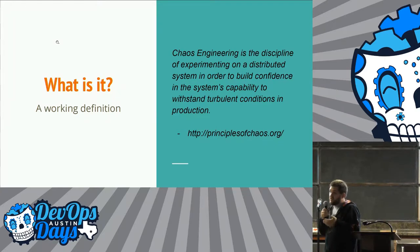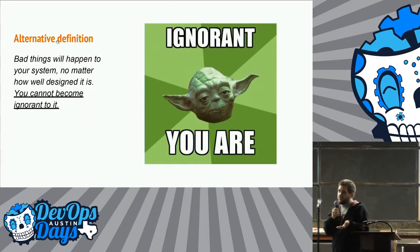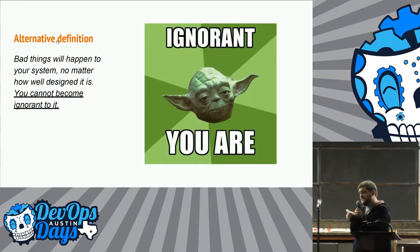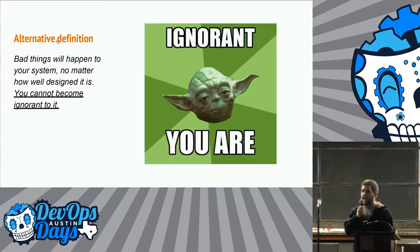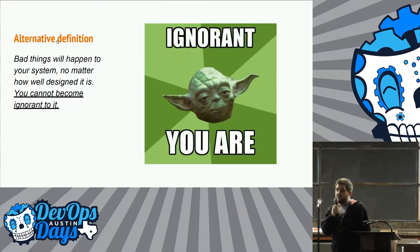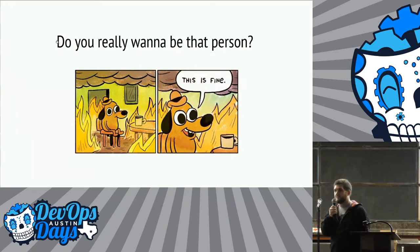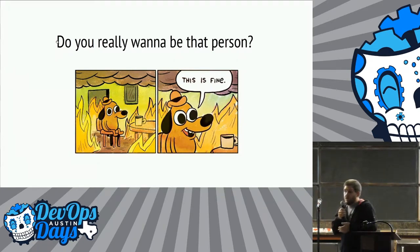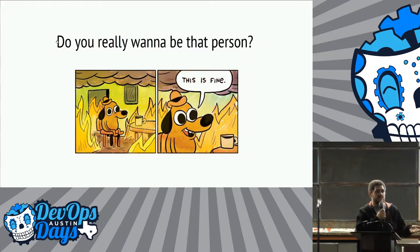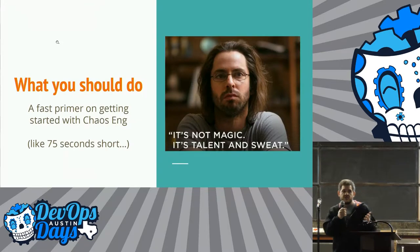They now have a chaos engineering role at Netflix you can apply for and have an actual engineering job. But here's an alternative definition you might like: bad things will happen to your system no matter how well you design it, period. So you can't become ignorant to it — as Yoda would say, ignorant you must not be. Do you really want to find out in an outage that you could have discovered a single point of failure a couple weeks ago? That's what chaos engineering is in a nutshell.